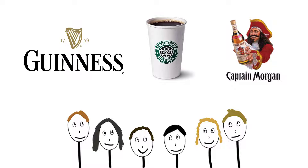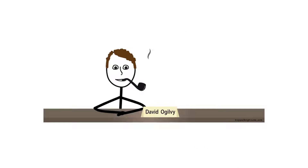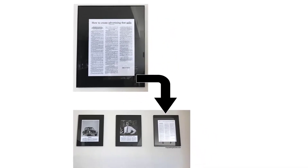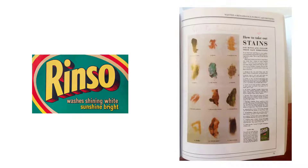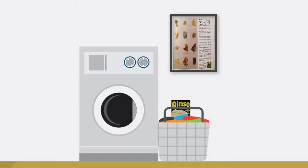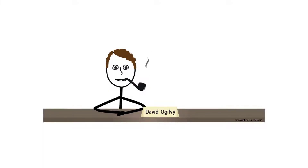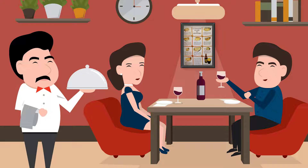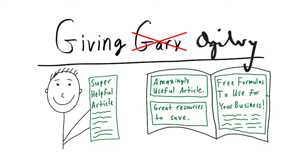Advertorials are really nothing new — they've been around for quite a while. The great advertising mind of David Ogilvy was doing advertorial-style content a long time ago. He knew that if a consumer saw an ad that benefited them, they would pay special attention and even rip it out of a magazine to save it. He made a Rinso detergent ad that did better than any other detergent ad ever, because homemakers would tear it out of the magazine and keep it as a reference guide. He also wrote one for Guinness — not only was it an advertisement, but people tore it out and kept it, and restaurants would even display it so patrons could help pair oysters. By giving out great information in the ad, Ogilvy made it way more effective.